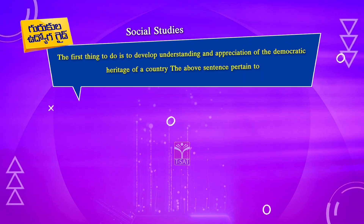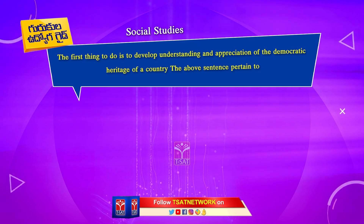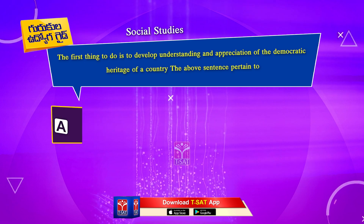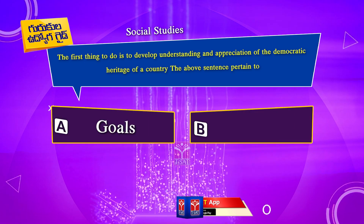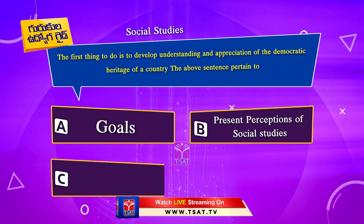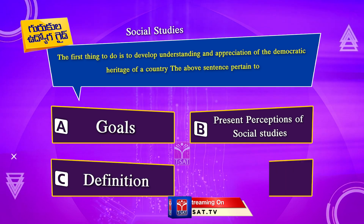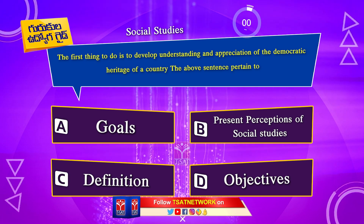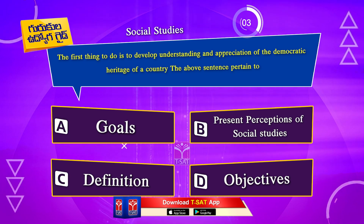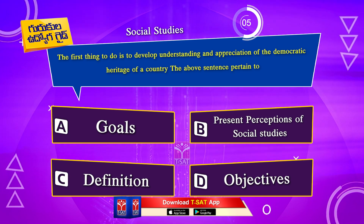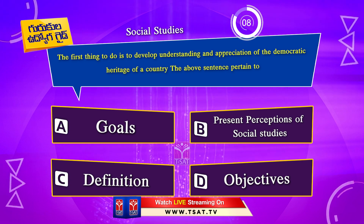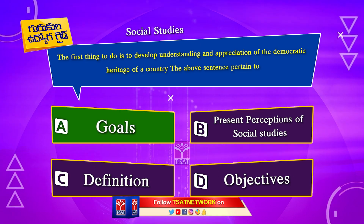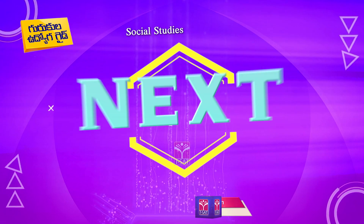Next question. The first thing to do is to develop understanding and appreciation of the democratic heritage of a country. The above sentence pertains to: Option A. Goals. Option B. Present perceptions of social studies. Option C. Definition. Option D. Objectives. The correct answer is Option A. Goals.